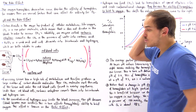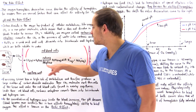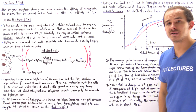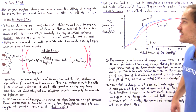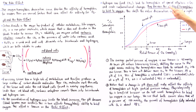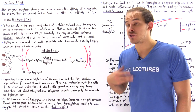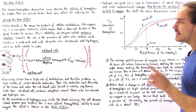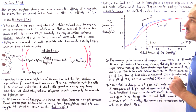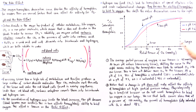The Bohr effect affects hemoglobin's ability to bind to oxygen. Hemoglobin has a special allosteric site, and H+ ions and CO2 can bind to this allosteric site on hemoglobin. Once they bind, they create a conformational change — a change in the three-dimensional structure of hemoglobin — which decreases hemoglobin's ability to bind to oxygen. This ultimately shifts the entire oxygen hemoglobin dissociation curve to the right.